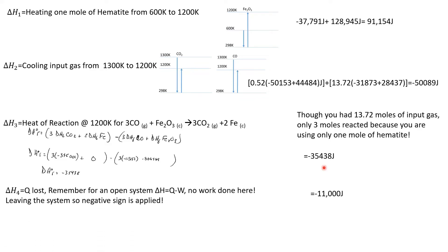Delta H4 is the heat loss. For an open system, delta H = Q − W. There's no work being done here, only heat. The heat is leaving the system, so a negative sign is applied. It was given as 11 kilojoules per mole of hematite reduced — so negative 11,000 joules. We just had to determine the sign.